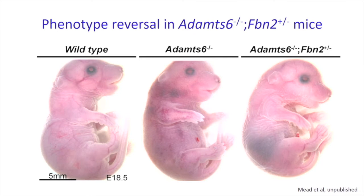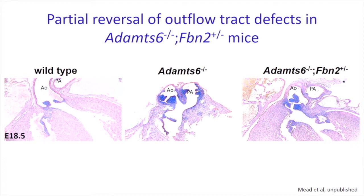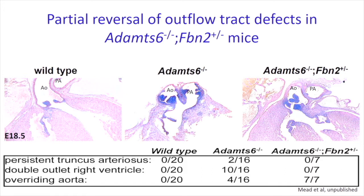Deletion of one copy of fibrillin-2 essentially reversed both the cardiac and skeletal defects. The hind limbs in the ADAMTS-6 knockout minus one copy of fibrillin-2 look very similar to wild type and are clearly more normal than the knockout. The same goes for the heart — here is a normal aortic outflow tract, here is a double outlet right ventricle in the ADAMTS-6 knockout, and we now lose the double outlet right ventricle, though the rotation of the base of the heart on the apex hasn't been fully rescued, leaving what's called an overriding aorta.